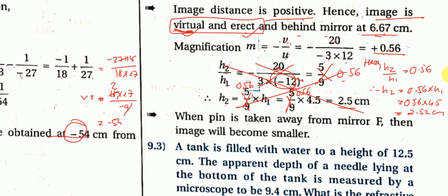Second logical question: when the pin is moved farther from the mirror, the image becomes smaller. At infinity the image is point-like. So as the object moves farther, approaching infinity, the image becomes smaller and smaller.